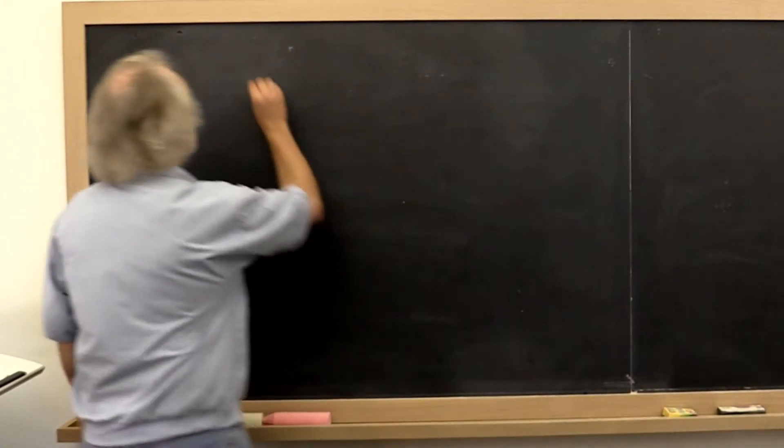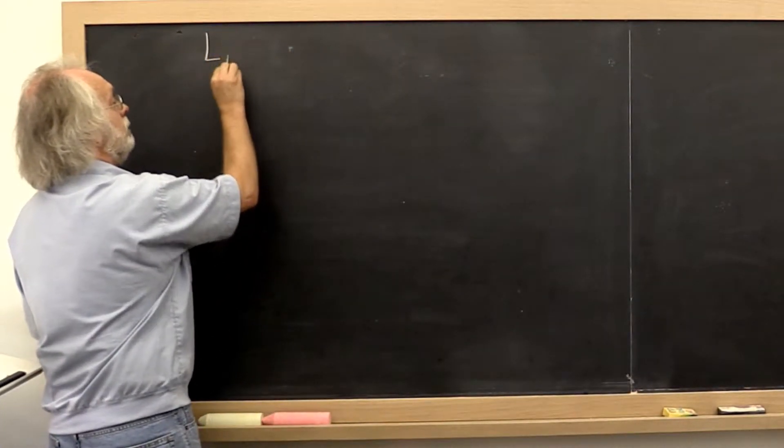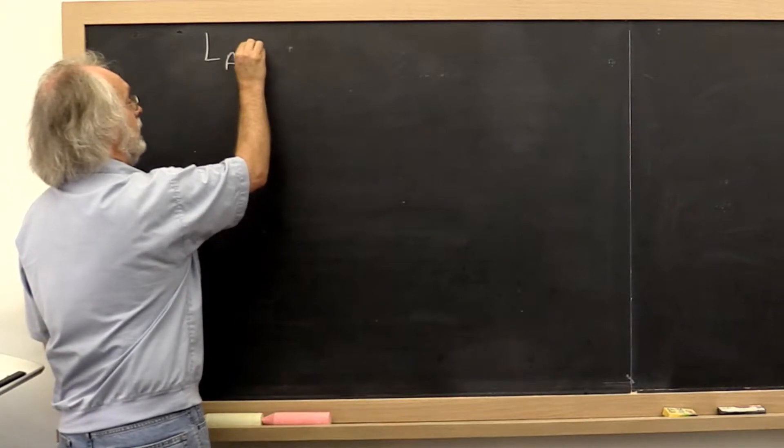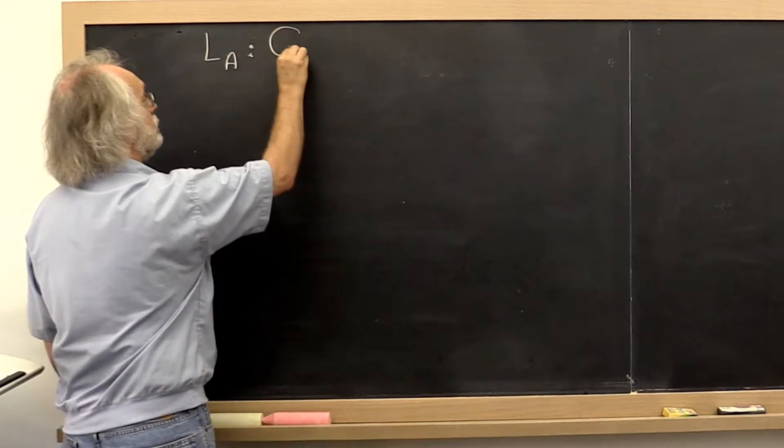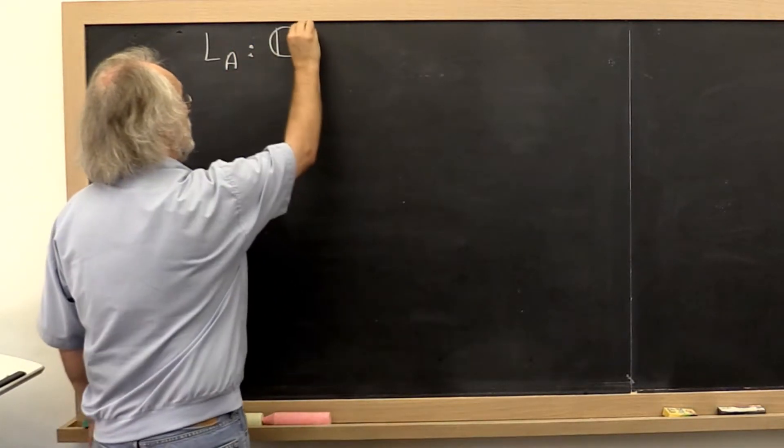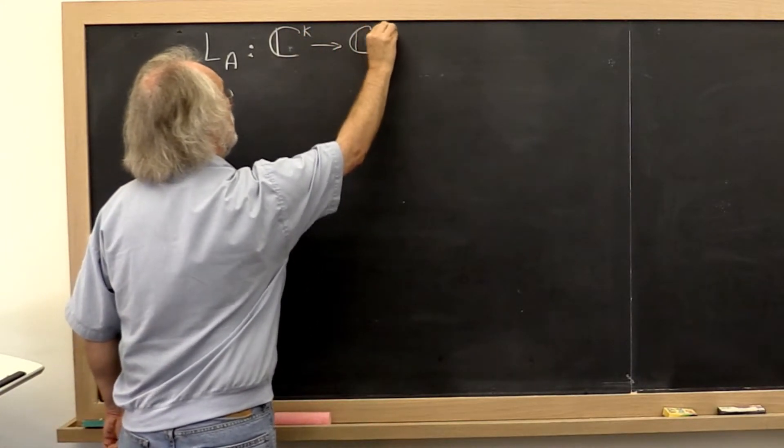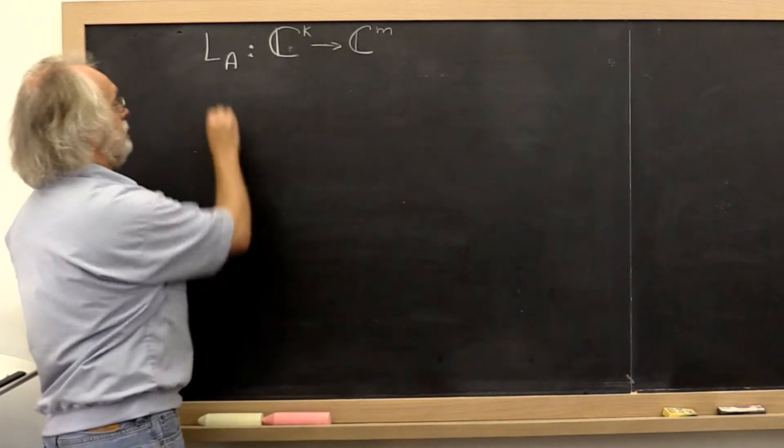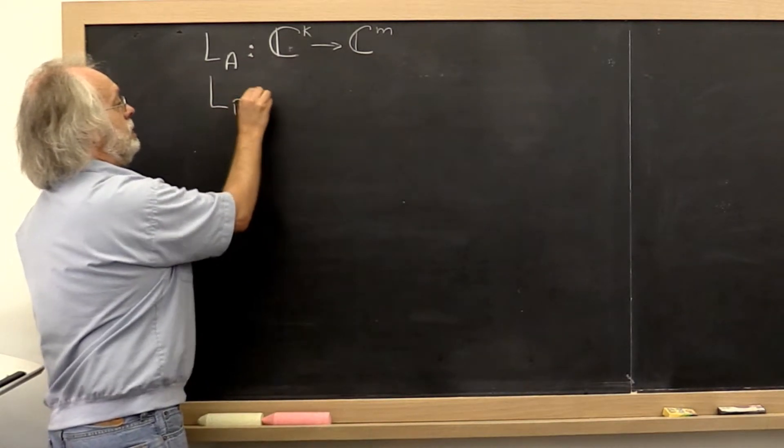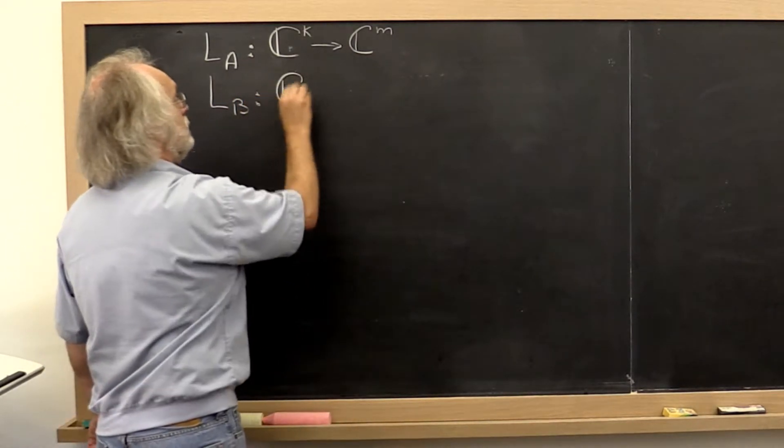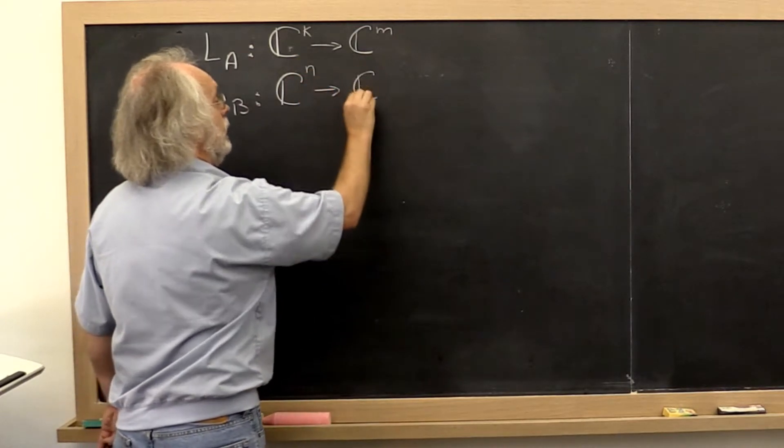So what if we have two linear transformations? We have linear transformation A that takes vectors from C^k into C^m, and we have a second linear transformation that takes vectors from C^n into C^k.